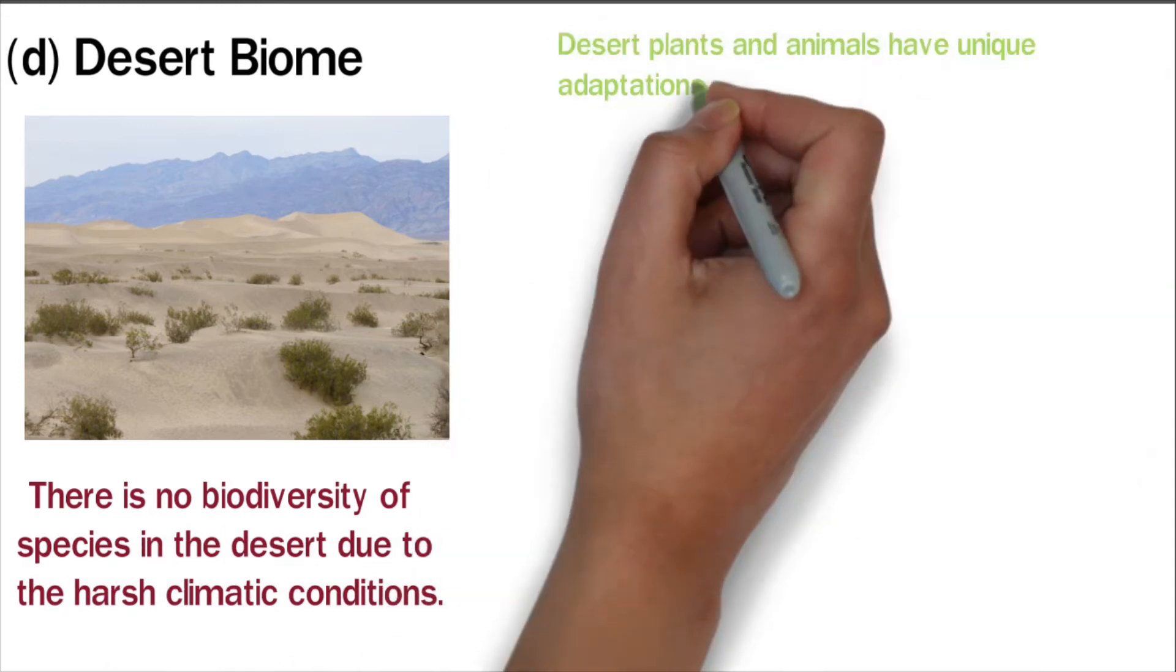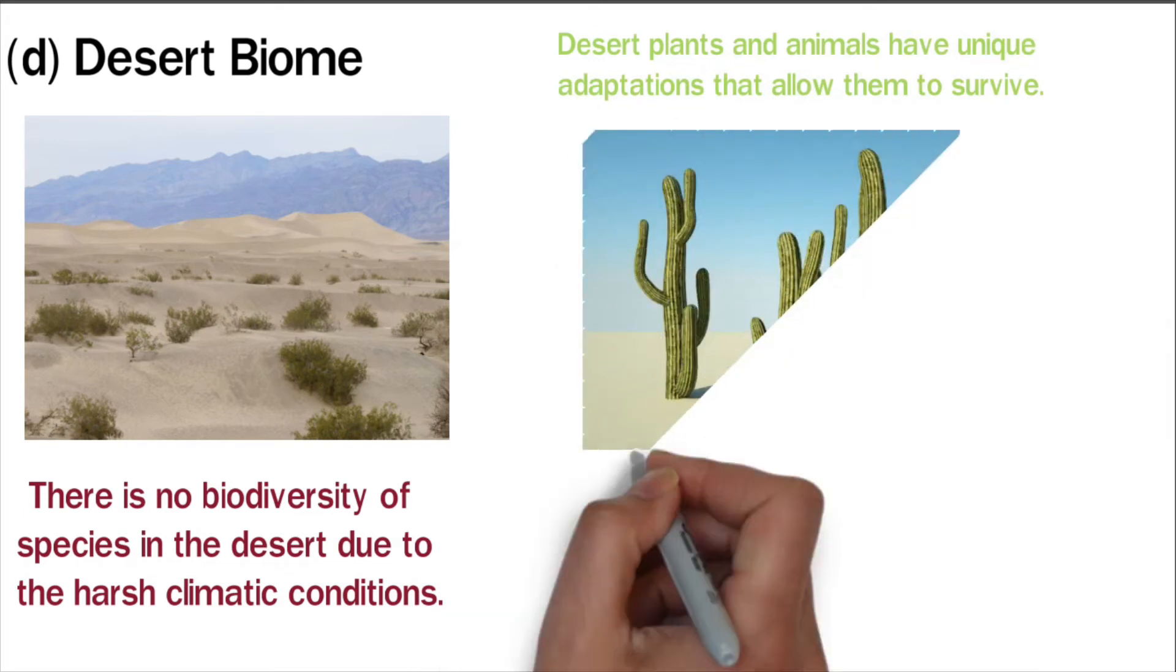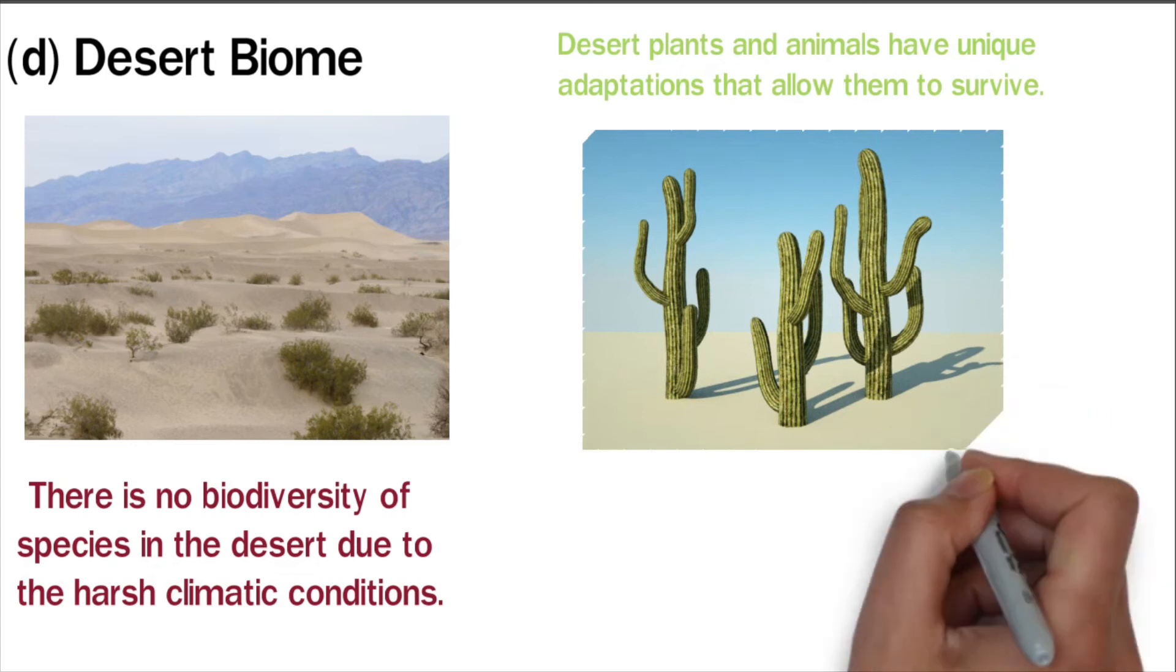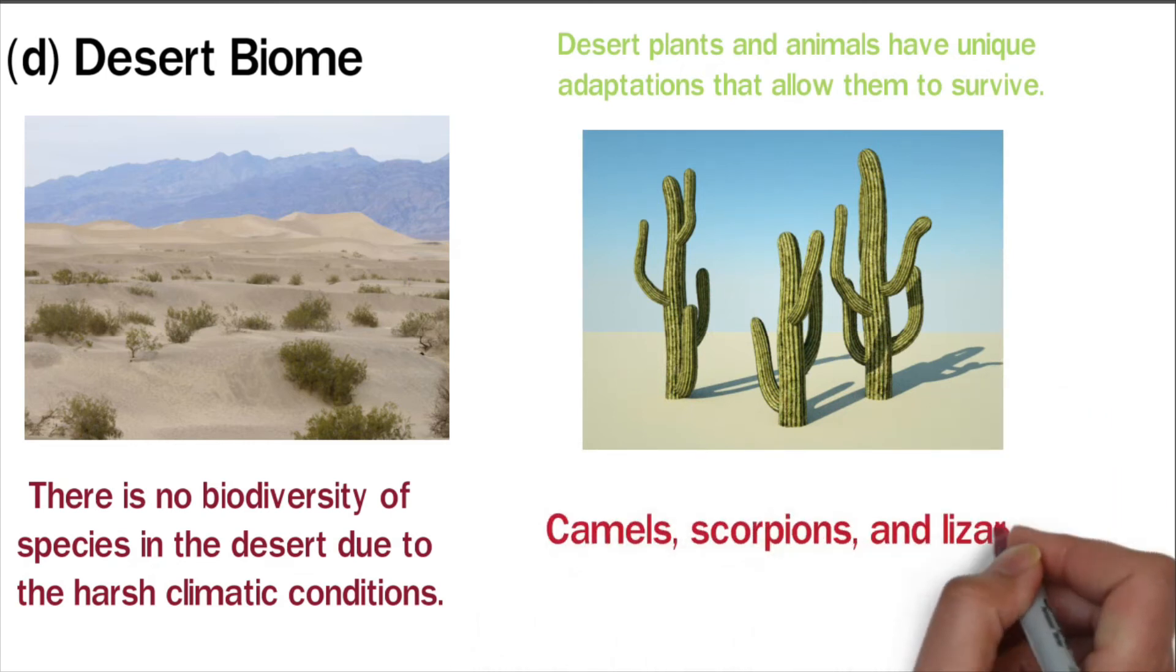Desert plants and animals have unique adaptations that allow them to survive. For example, cacti have thick stems that can store a lot of water while animals burrow to escape the heat. Camels, scorpions, and lizards are some of the animals that thrive in desert biomes.